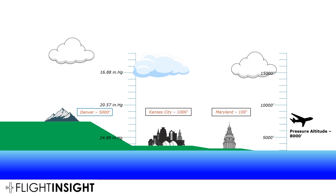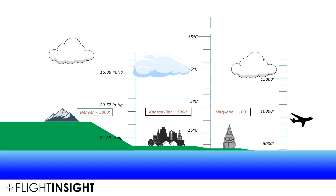Our fantasy land is always the same temperature: 15 degrees Celsius at the surface, getting 2 degrees colder with every 1,000 feet gained. If the temperature is different than fantasy land — say it's warmer — our aircraft performs even worse. Now instead of saying it'll perform as if it's at 8,000 feet, we may say it'll perform as if it's at 9,000 feet. This is called density altitude, which is pressure altitude corrected for non-standard temperature. If I take a true altitude, a sea level pressure, and a temperature, I should be able to say what my aircraft would perform like in fantasy land experiencing the same air density — and that's what density altitude is.